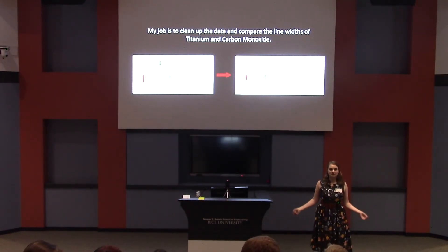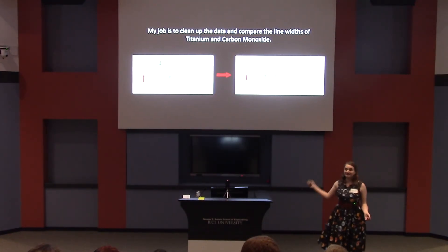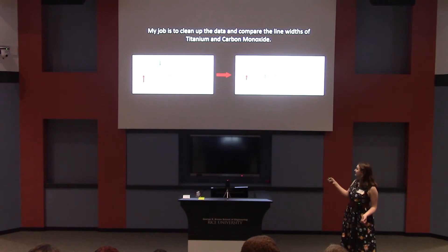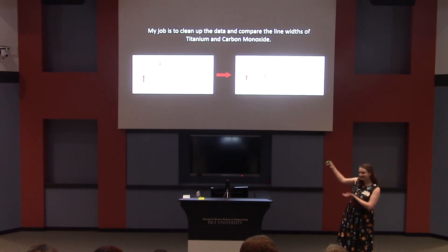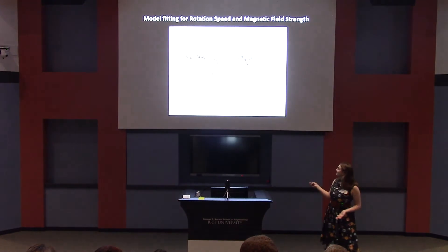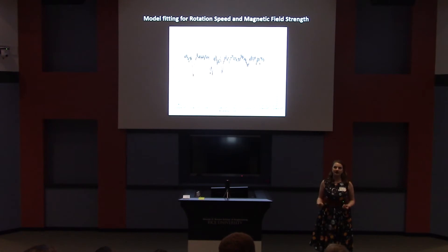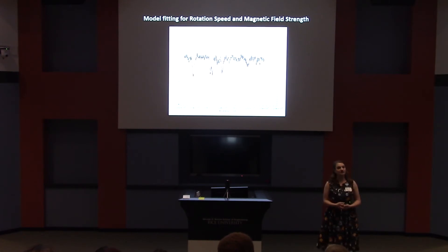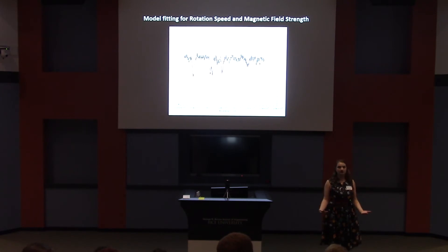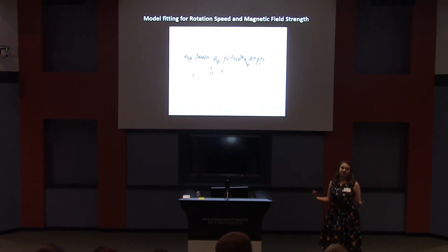So what do I actually do all day? Well, mostly I sit at a computer. I spend a lot of time cleaning data — this is how the data looks when I get it, and this is how it looks when I'm done. It's much prettier. Then once I have my nice clean data, I use a stellar model that was developed by my professor, and I fit this to the star. The model has encoded parameters about how fast the star rotates and all sorts of other parameters about the star.